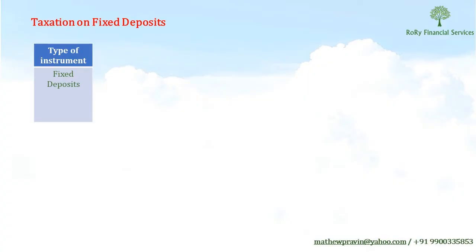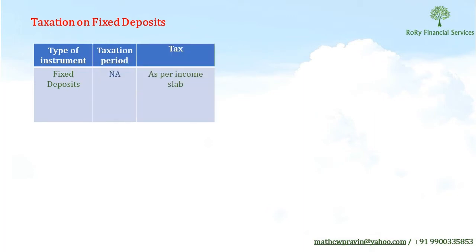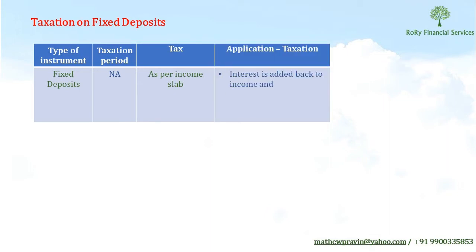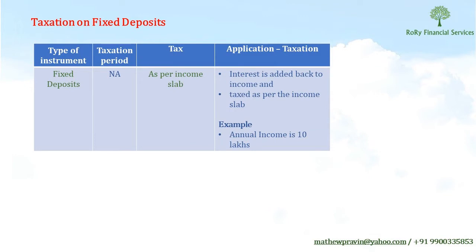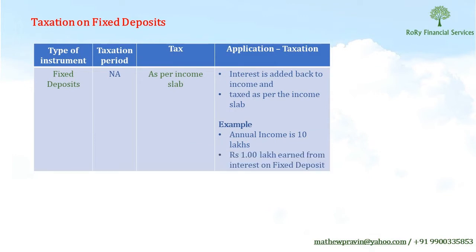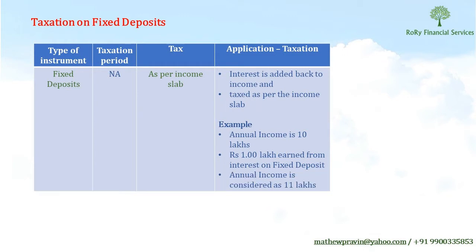As most of us are familiar with fixed deposits, let's quickly look at the taxation on fixed deposits and then use it to compare the taxation on equity mutual funds. The tax on fixed deposits is charged as per the income slab that we are at — interest is added back to the income and then taxed as per that slab. For example, if our annual income is 10 lakhs and we earn 1 lakh from interest on fixed deposits, our annual income is considered as 11 lakhs and we are taxed at that bracket.